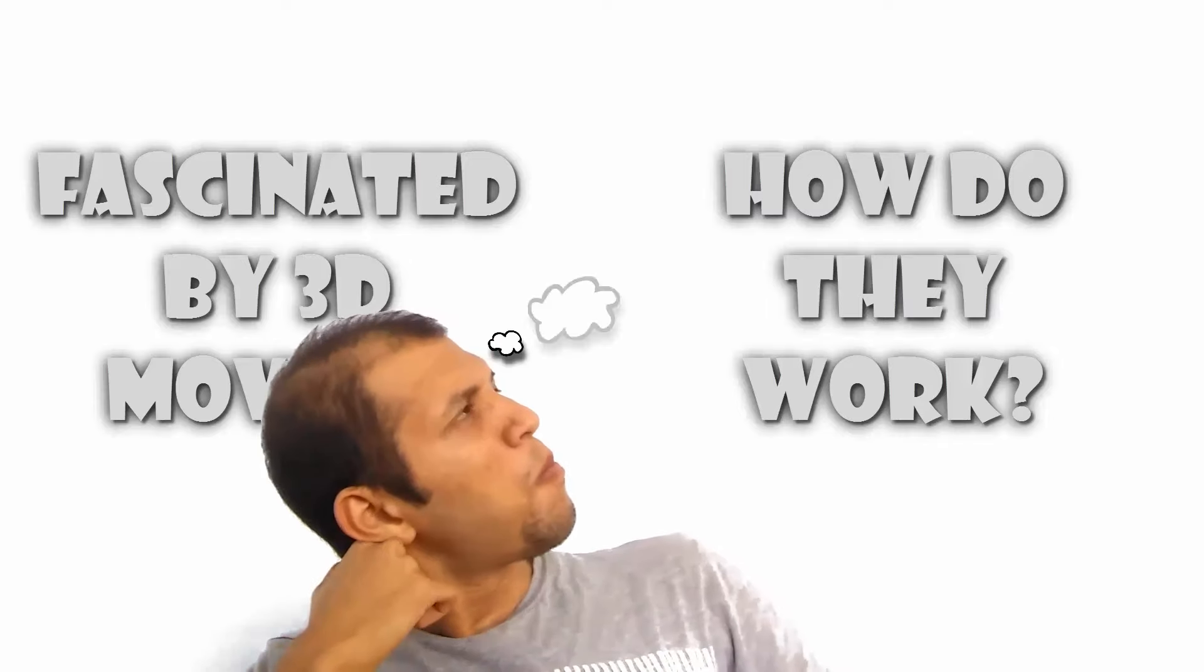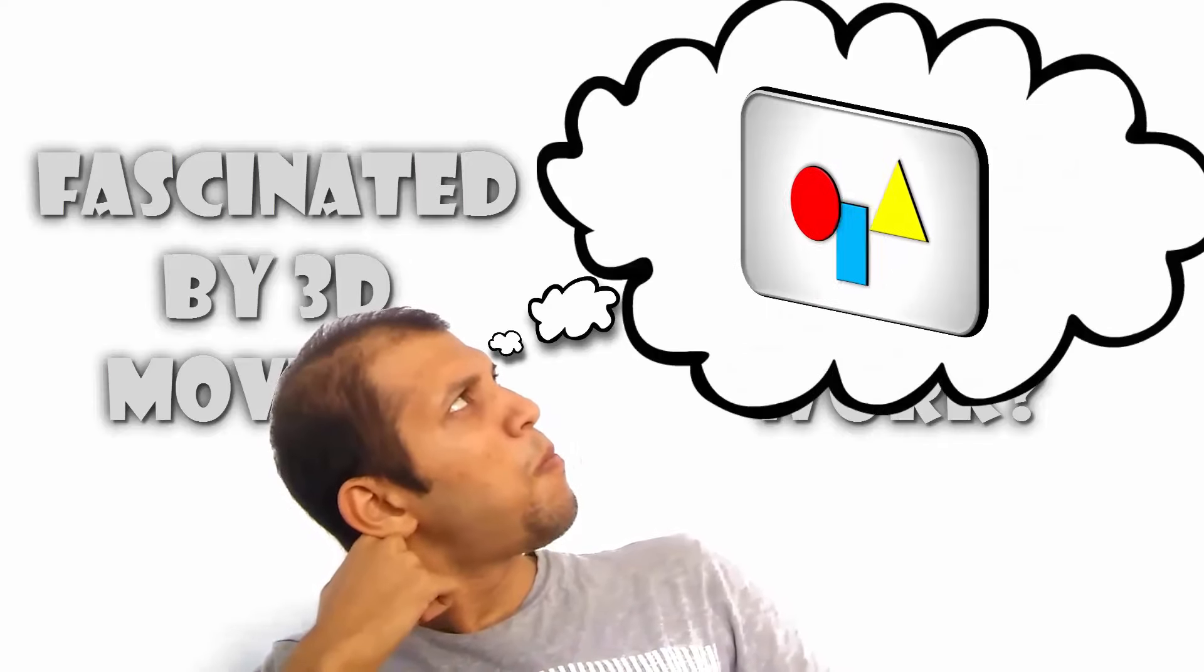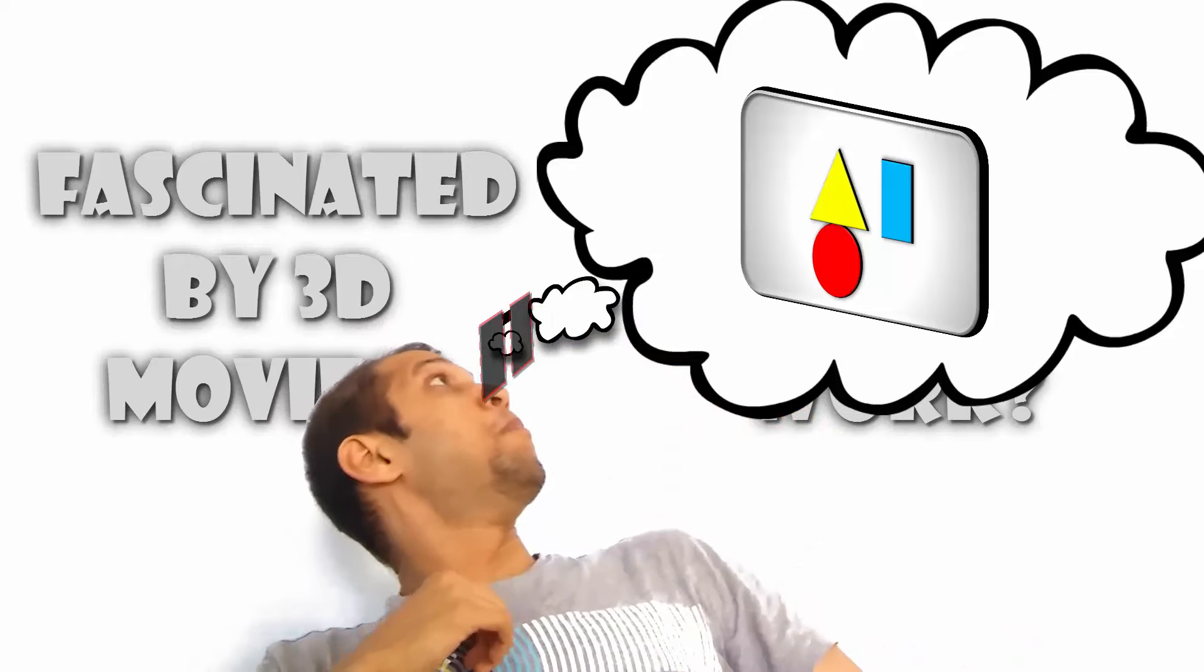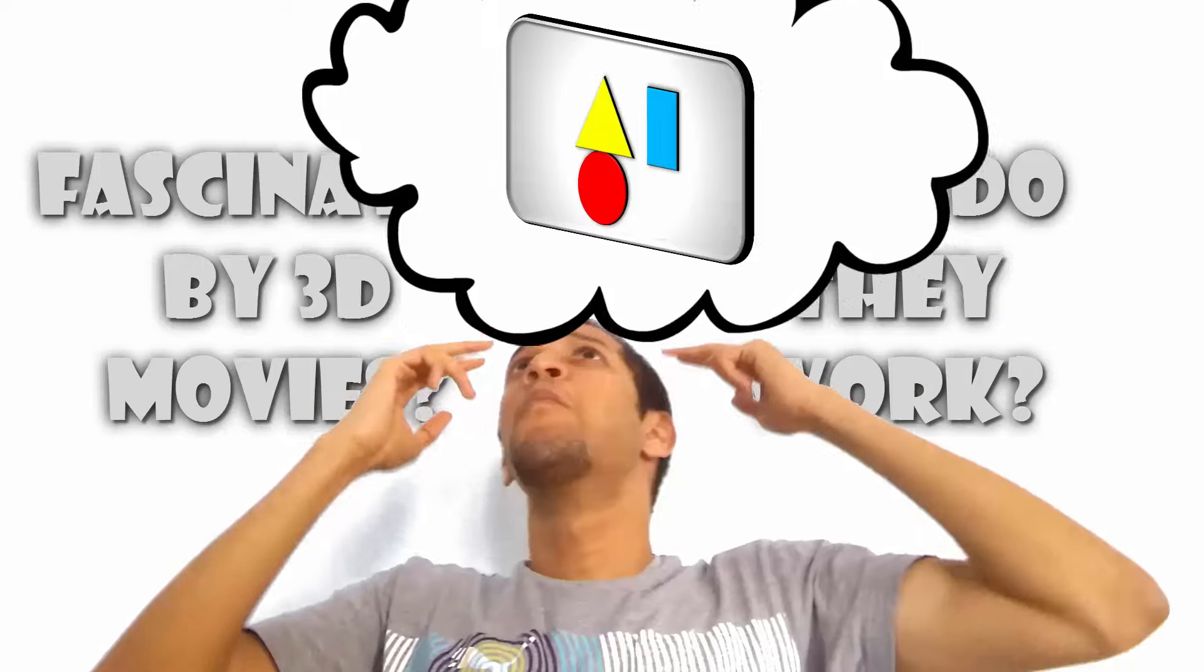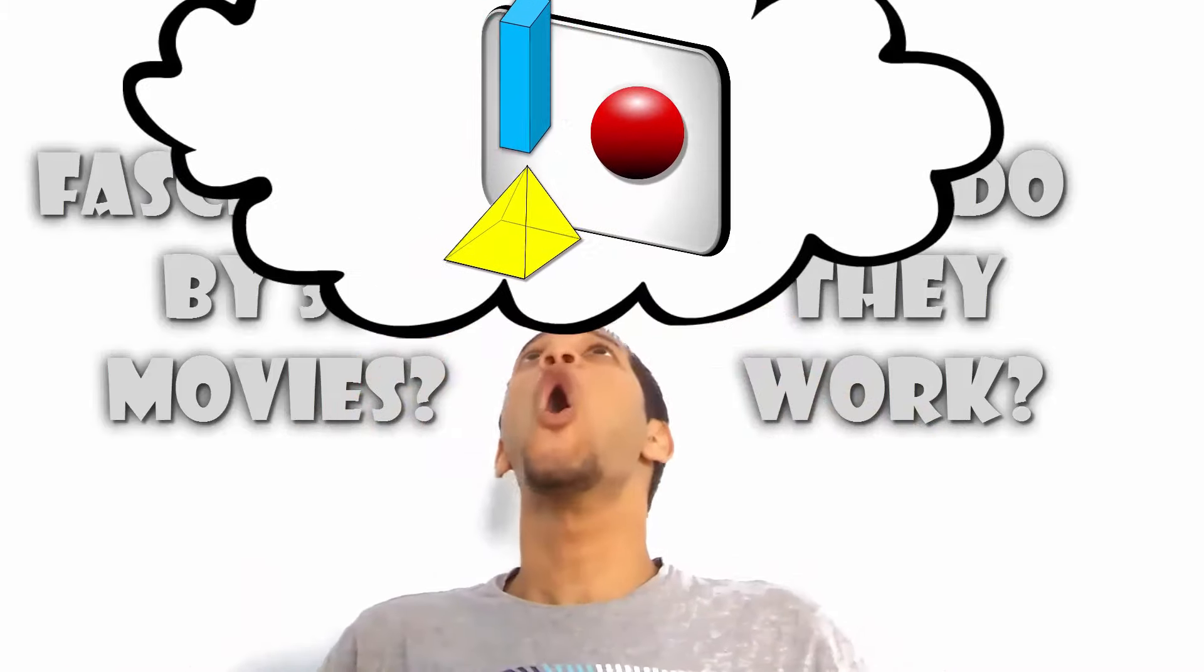How do a bunch of images moving on a flat screen make their way into our eyes via 3D magical glasses and then force our brains to convert them into 3 dimensional information?